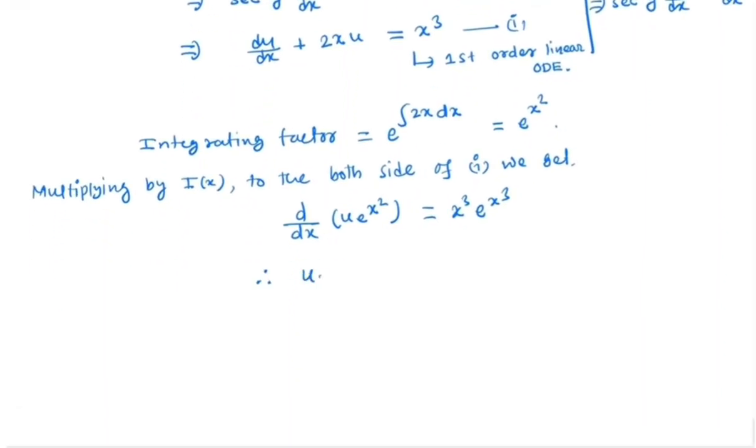So u e^(x²) equals integral of x³ e^(x²) dx. Again we check: let x² equal to p, so we have 2x dx equal to dp. So x dx is nothing but dp/2.